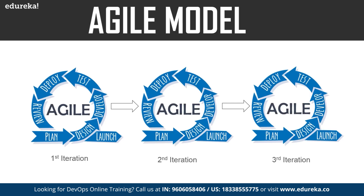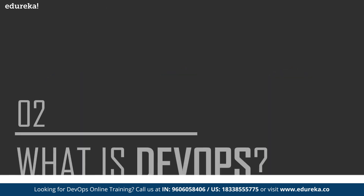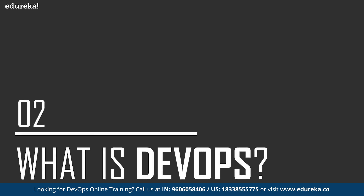So this model was better than the previous model, but it too had a few drawbacks. While this model brought agility to the development team, the operations team still did not come up to speed with the development team. Because of this, there was constant conflict between the development team and the operations team, which hampered the pace of software development and release. This was the biggest drawback of the agile model, and the next approach is the DevOps approach.